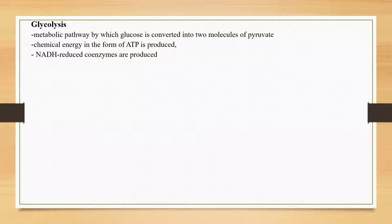In our previous video we learned that digestion is a process by which large molecules such as carbohydrates or polysaccharides are digested to form smaller molecules such as glucose and other monosaccharides. Proteins are also digested to form amino acids, and when triglycerides or fats and oils are hydrolyzed they will be converted into fatty acids and glycerols.